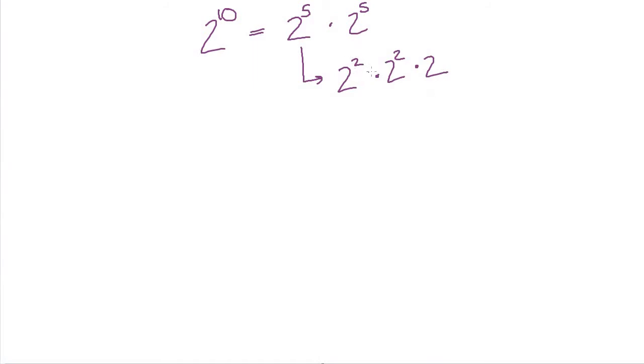So now total, we have 1, 2, 3, 4, 5 twos being multiple, 5 twos total over here, which is why it's 2 to the 5th.